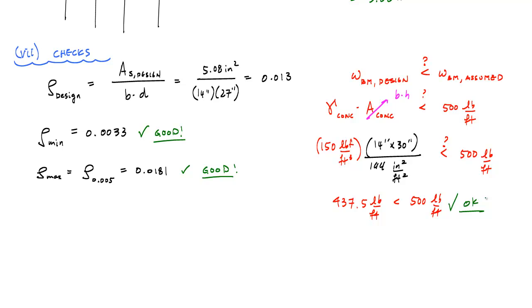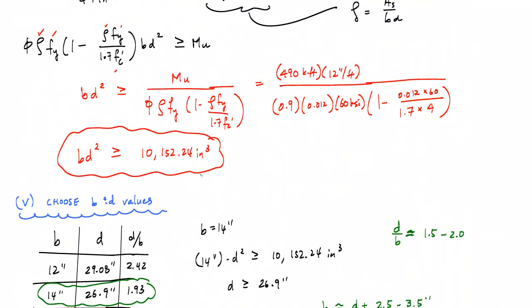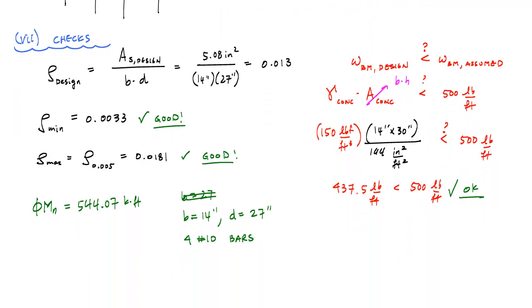If you have the time, calculate ΦMn: with this design you should get approximately 544.07 kip-ft, which exceeds MU = 490 kip-ft. As long as your B, D, and area of steel satisfy the BD² requirement and ρ ≥ 0.012, you're good. Hopefully that was helpful and insightful — I'll leave it to you to draw a cross-section detail for this design. Let me know if you have any questions. See ya.